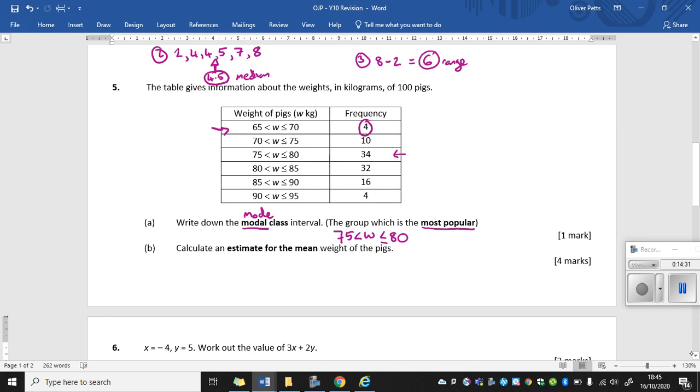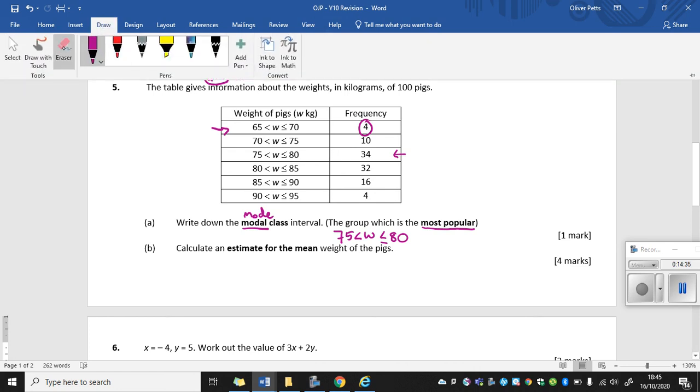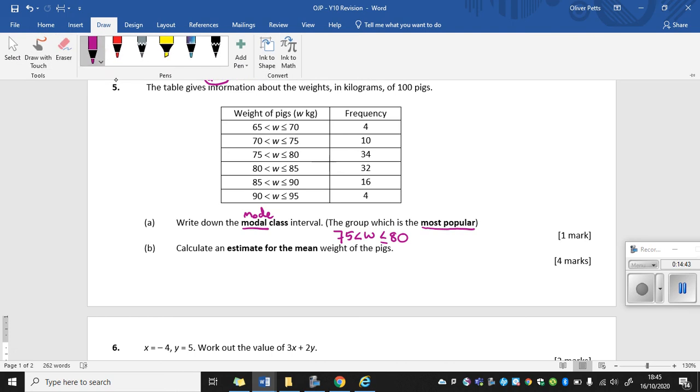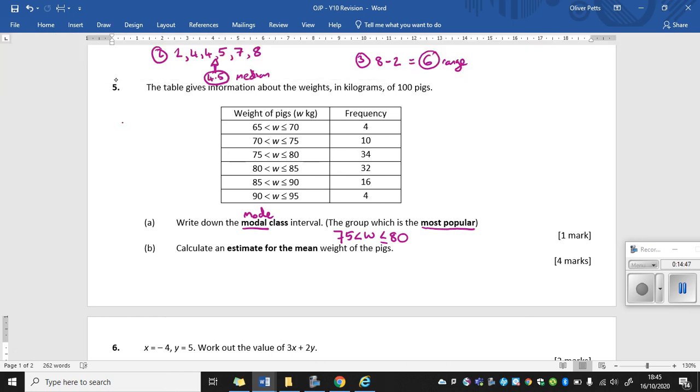Part B, calculate an estimate for the mean. Now what I'm going to do first, I'm just going to rub out a few bits so they don't get in the way. Okay, so an estimate for the mean. So we need to find a mean from grouped data. So I'm just going to go through the routine for this. The first thing we need to do is to write down the midpoints of our groups, so the halfway values of our groups. Now halfway between 65 and 70, bit of a tricky one, that is 67.5. Halfway between 70 and 75 is 72.5. Now we're going to have 77.5, 82.5, 87.5, and finally 92.5. So these are all the halfway values with each of our groups.